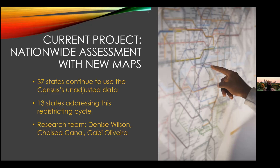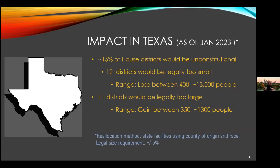For example, in 2020 in Texas — which is always like ground zero for redistricting issues — roughly 15% of all of their state house districts would be unconstitutional, because 12 of them would be legally too small and 11 of them would be legally too large. That's largely because where you see aggressive partisan gerrymandering, prison populations are a very useful tool to use as part of partisan gerrymandering. Good governance practices — having a nonpartisan redistricting commission, having clear guidelines about what a fair map is — largely resolve the constitutionality problem. Where you see nonpartisan redistricting, we see less of an impact on constitutionality.